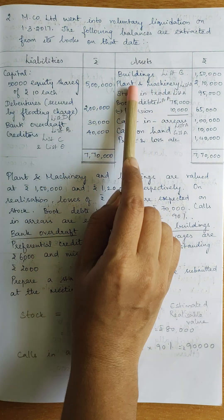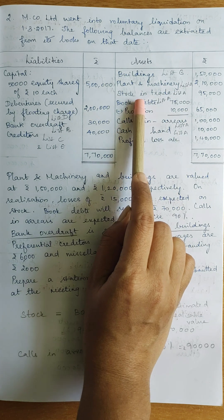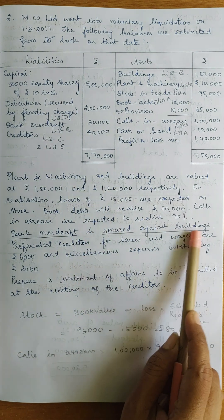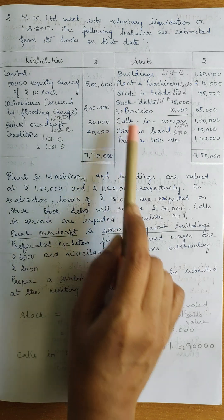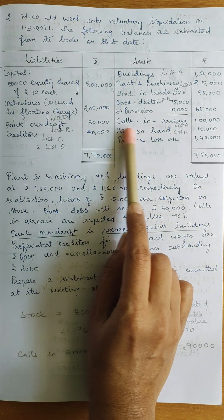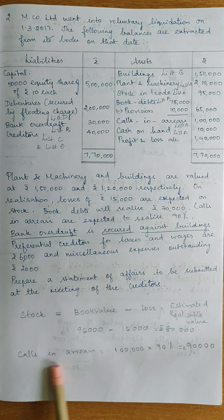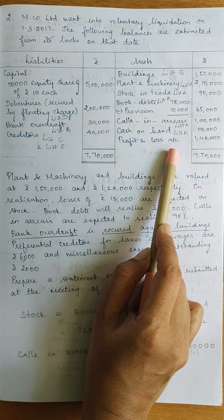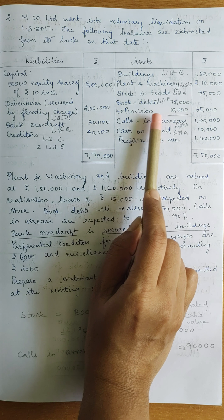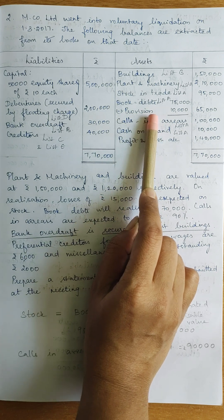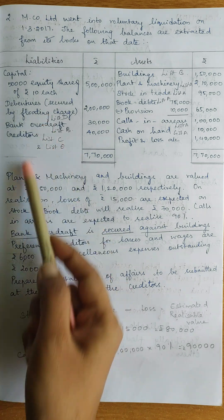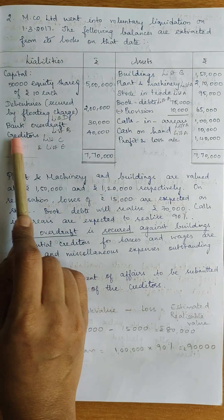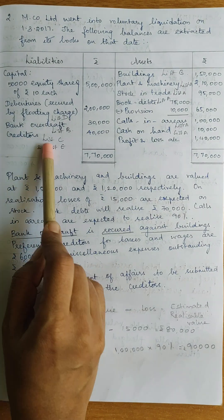Plant and machinery — not pledged, so List A. Stock and trade — not pledged, List A. Book debts — not pledged, List A. Buildings — only this one is given as security, so it goes into List B. Calls in arrears have a realizable value given, so they go into List A. Cash on hand goes into List A. P&L account does not appear since no estimated realizable value is given. For the order of payment, preferential creditors come first, which go into List C.